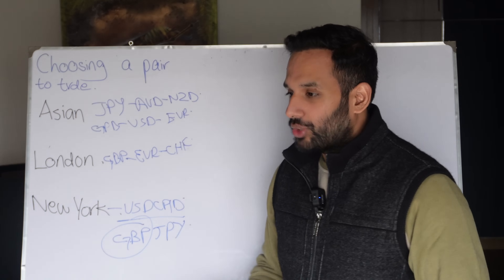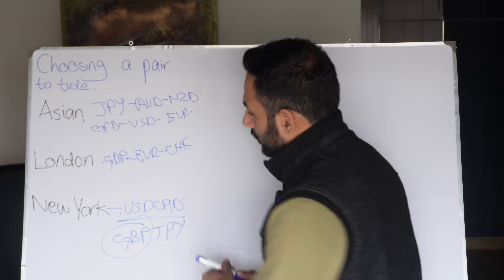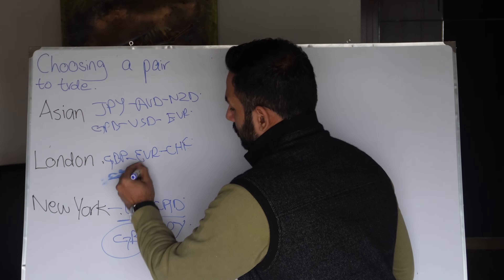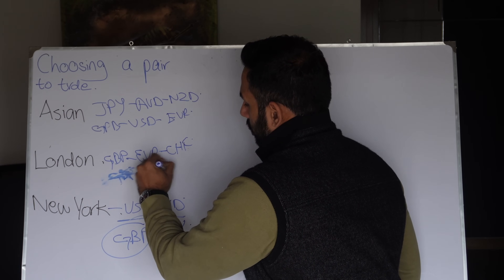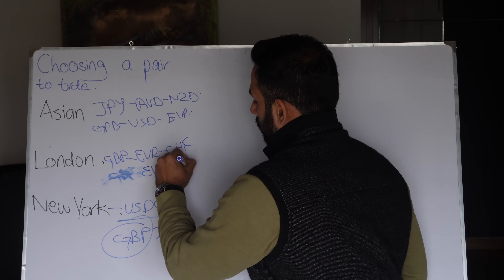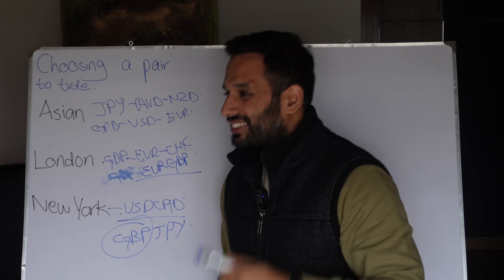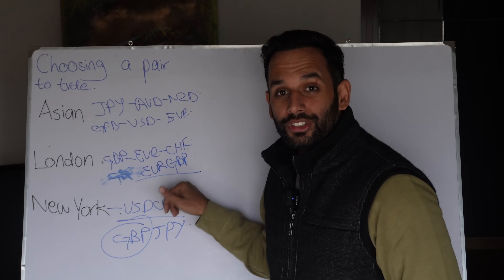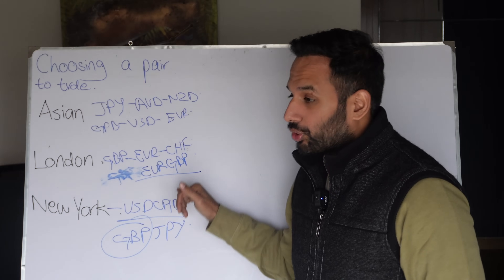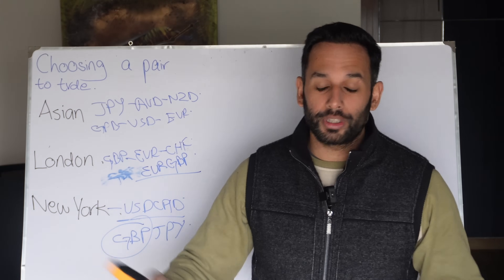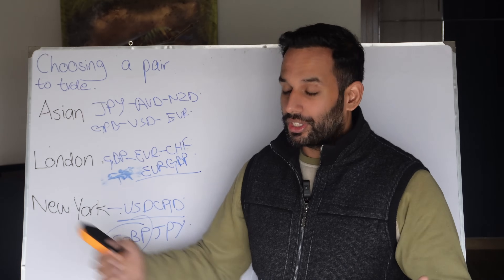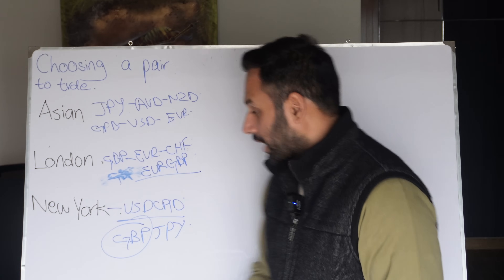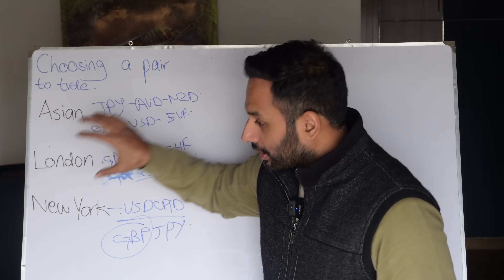It's a challenge when you have a pair like EUR/GBP in the London session, because now you have two currencies influencing one currency pair. You would need one to be really strong and one to be really weak for it to move. That's why you can see them range or consolidate, or there's less volume at that time.